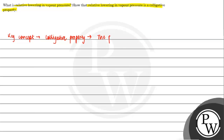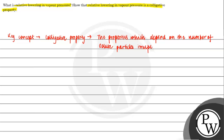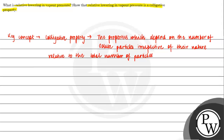The properties which depend on the number of solute particles irrespective of their nature, relative to the total number of particles present in the solution — such properties are known as Colligative Properties.